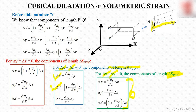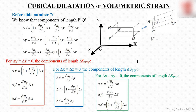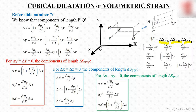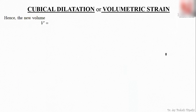Once we know the lengths of P'Q', P'R', and P'S', we take their vector multiplication to get the volumetric strain. For that we use matrix determinants: the deformed volume V' equals the determinant of the matrix formed by the components of P'Q', P'R', and P'S'. This determinant is straightforward and needs no further explanation.